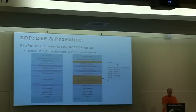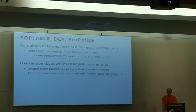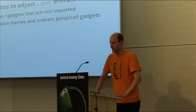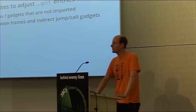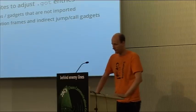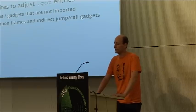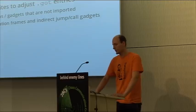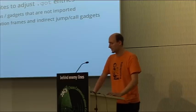What changes if we add ASLR — address-based layout randomization — to the picture, combining ASLR, DEP, and ProPolice? We have to rely on already existing code and static locations we know about. We also have a set of imported functions in the application in the PLT and some symbols in the GOT that we can reuse. We can use random byte writes to adjust these GOT entries and redirect control flow, then rely on the different functions that will be called at other places in the application. We can combine stack invocation frames plus indirect call and jump gadgets.